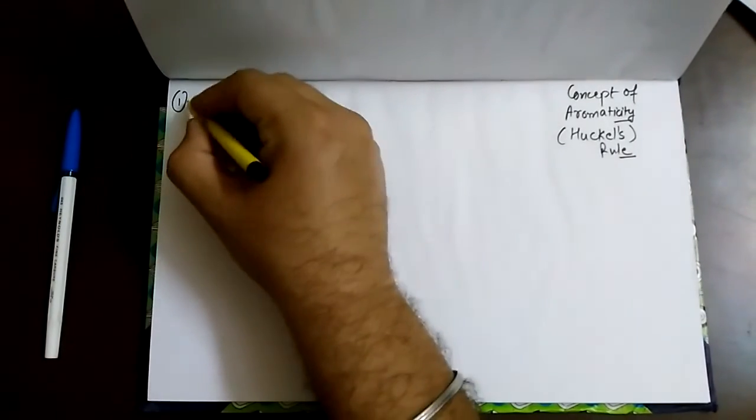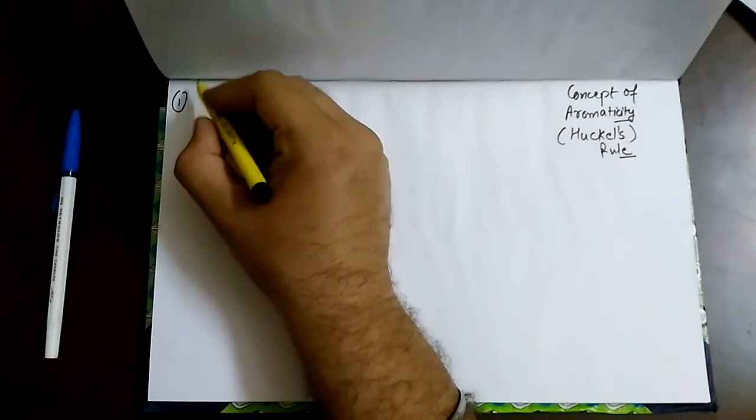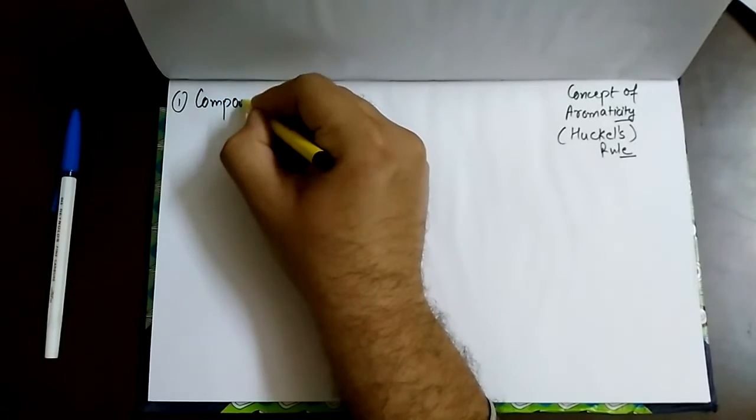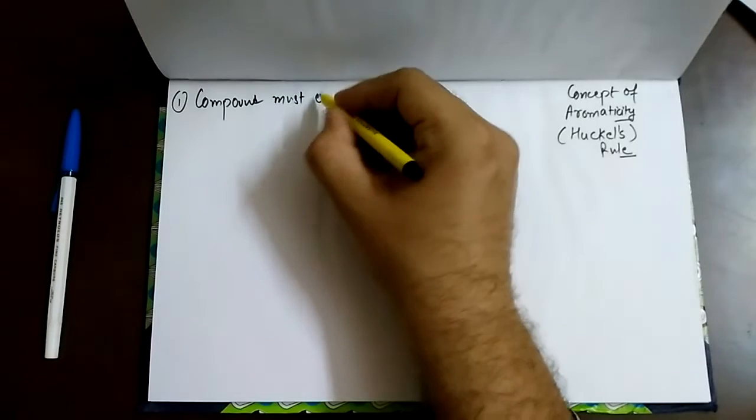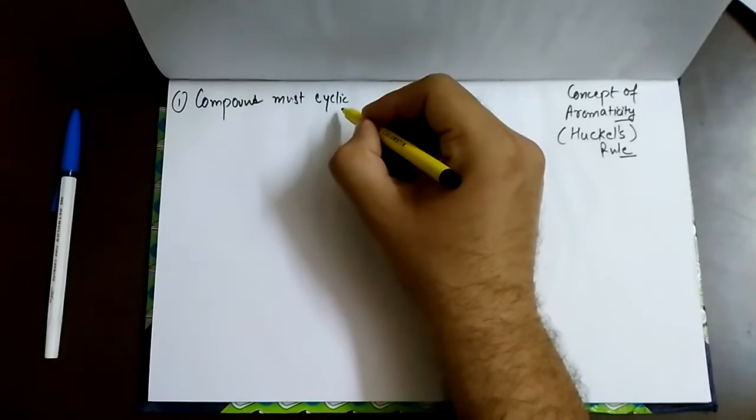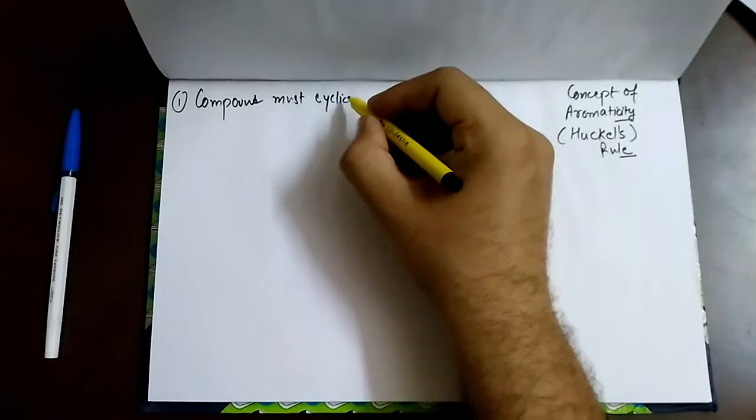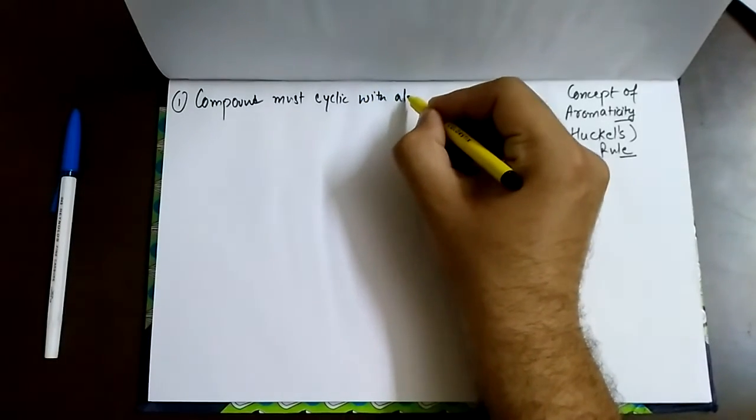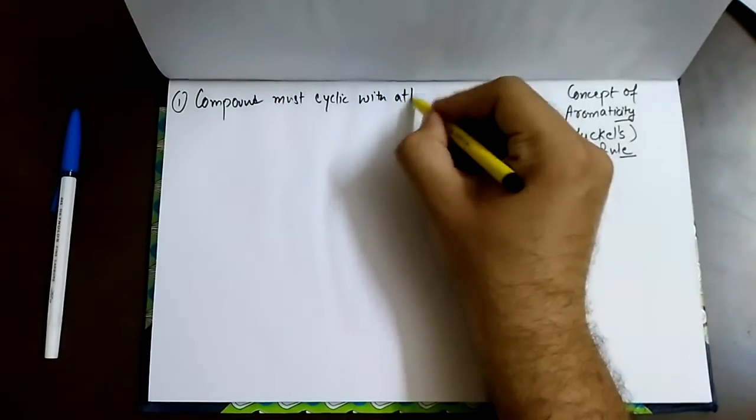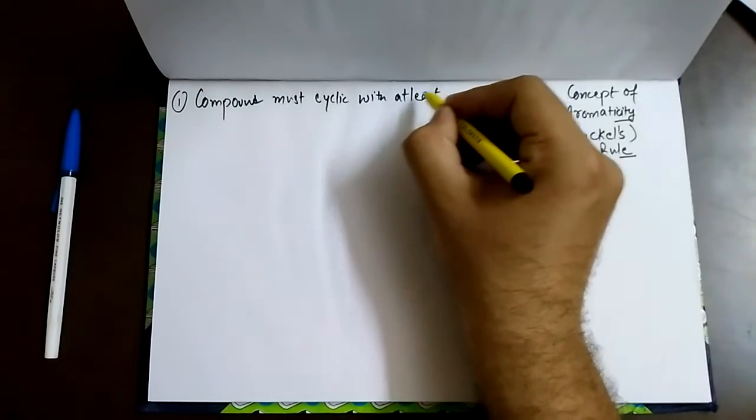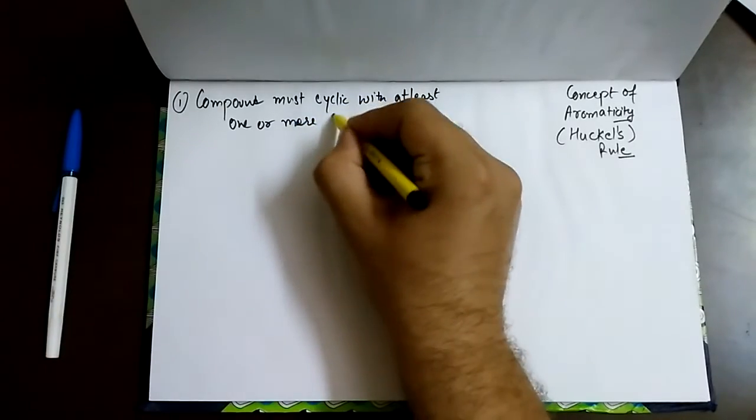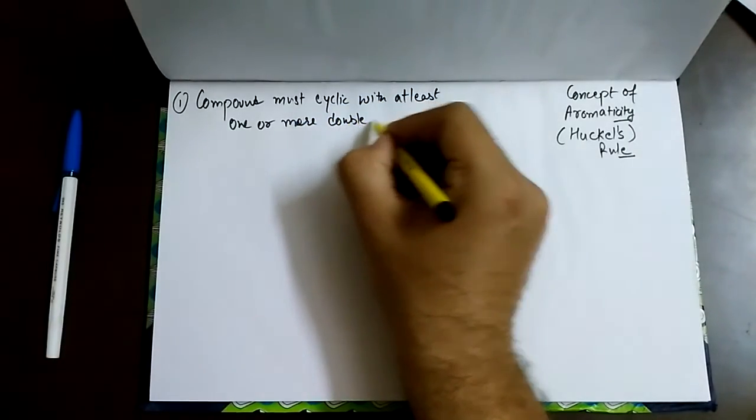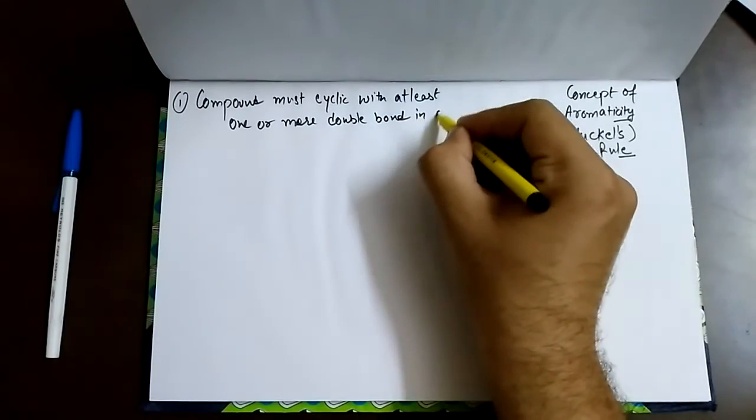What is the first condition? The compound must be cyclic in nature with at least one or more double bonds in a ring.